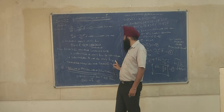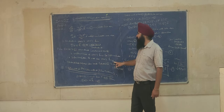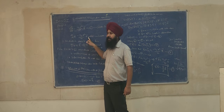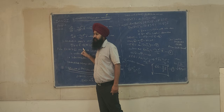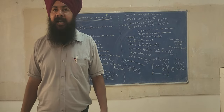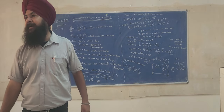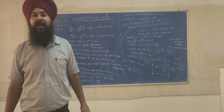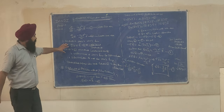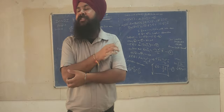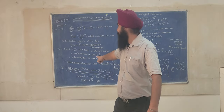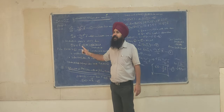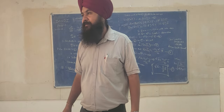Superconductors do not obey Ohm's law, so the current density depends upon the vector potential A. In a conductor, J depends upon E; but in a superconductor, J depends upon A, which is called the vector potential. How London's second equation is the replacement of Ohm's law for a superconductor is one of the five important questions you need to write.